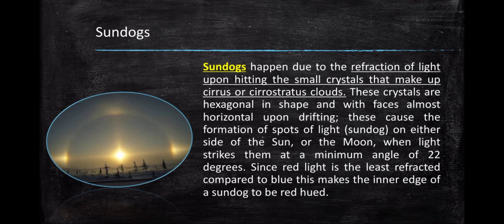Since red light is the least refracted compared to blue, this makes the inner edge of a sundog to be red-hued. I have also here a picture of a sundog. Unlike halos which are bright rings around the sun, sundogs are spots on either side of the sun.